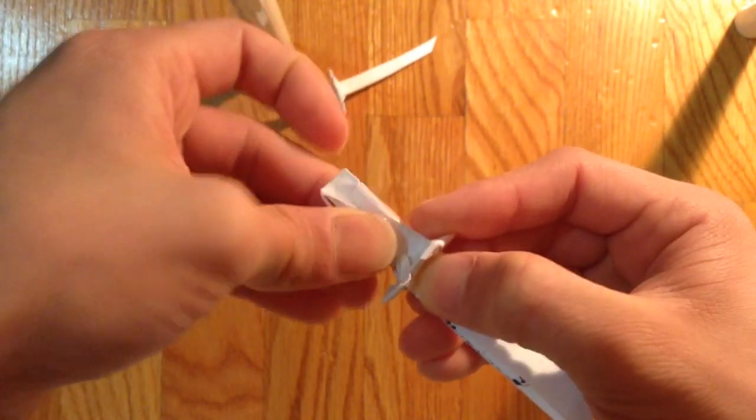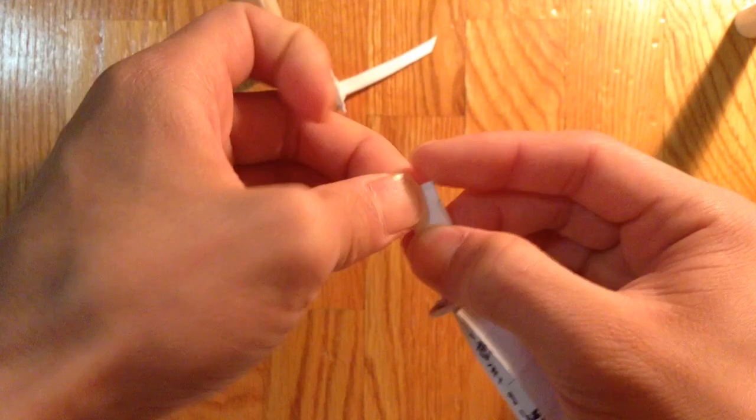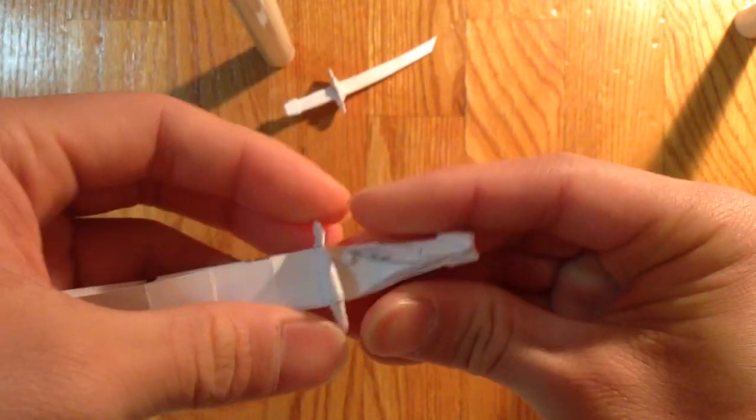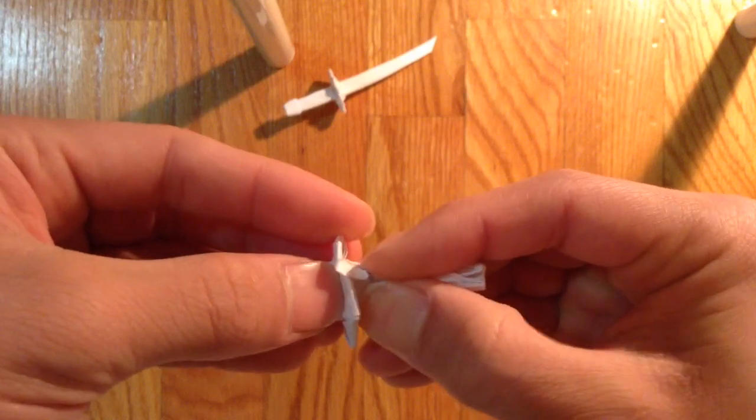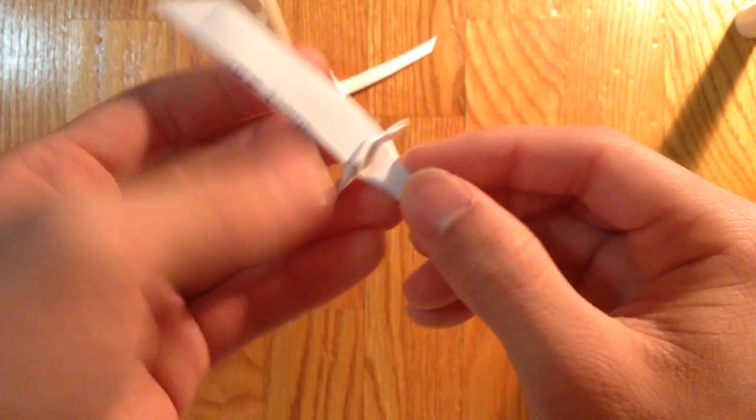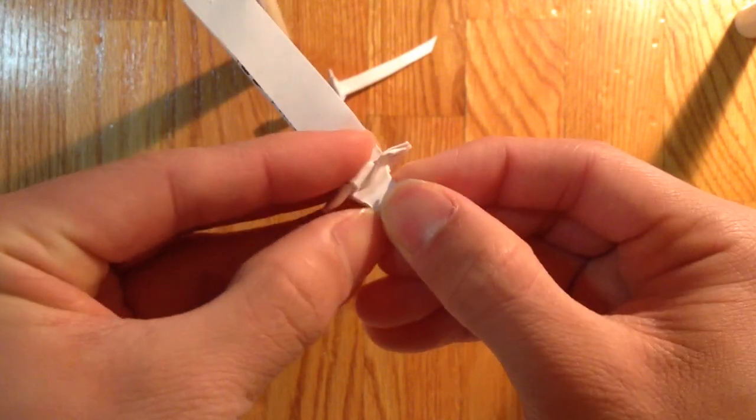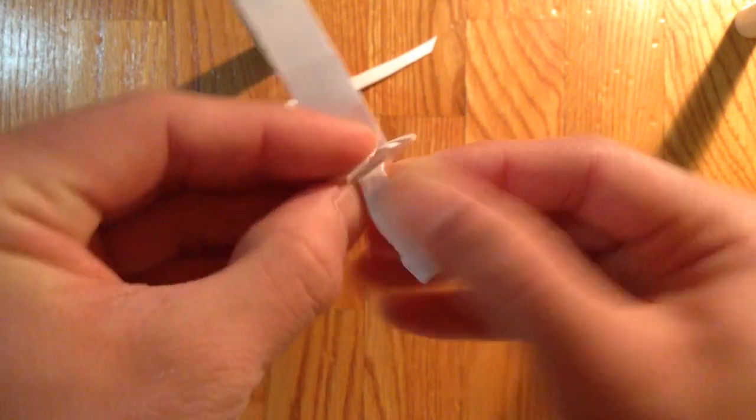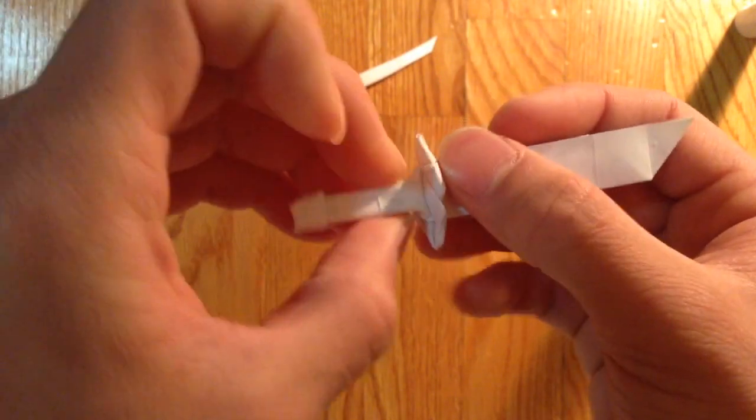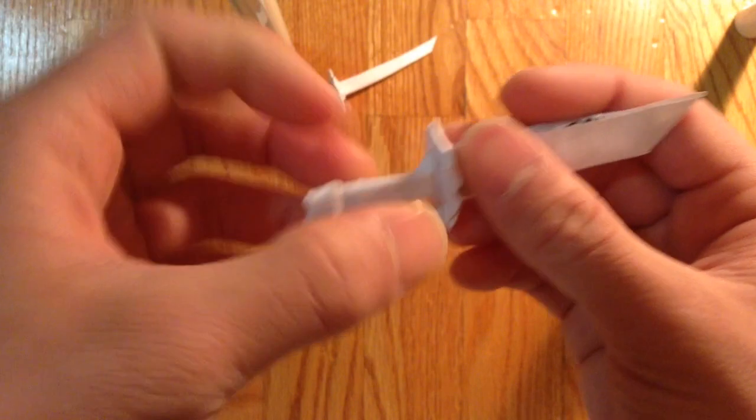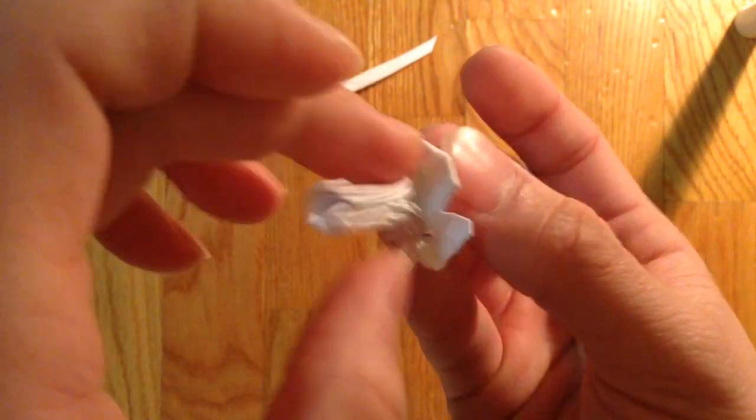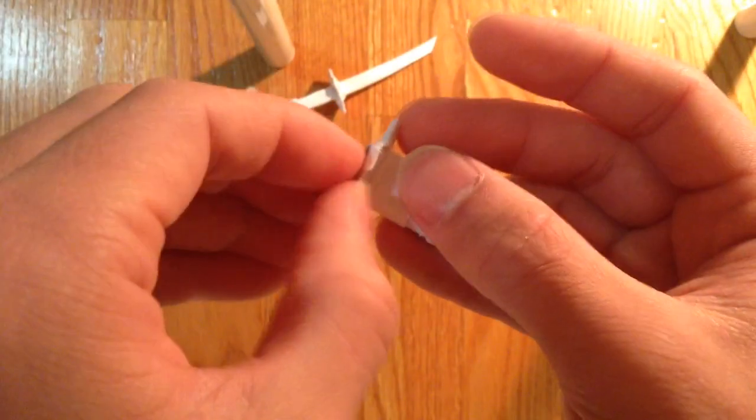From here you just want to shape out the handle and the blade and everything. So bring the edges towards the center like this. It will be kind of hard towards the center like that. It might look ugly like right there, but oh well.